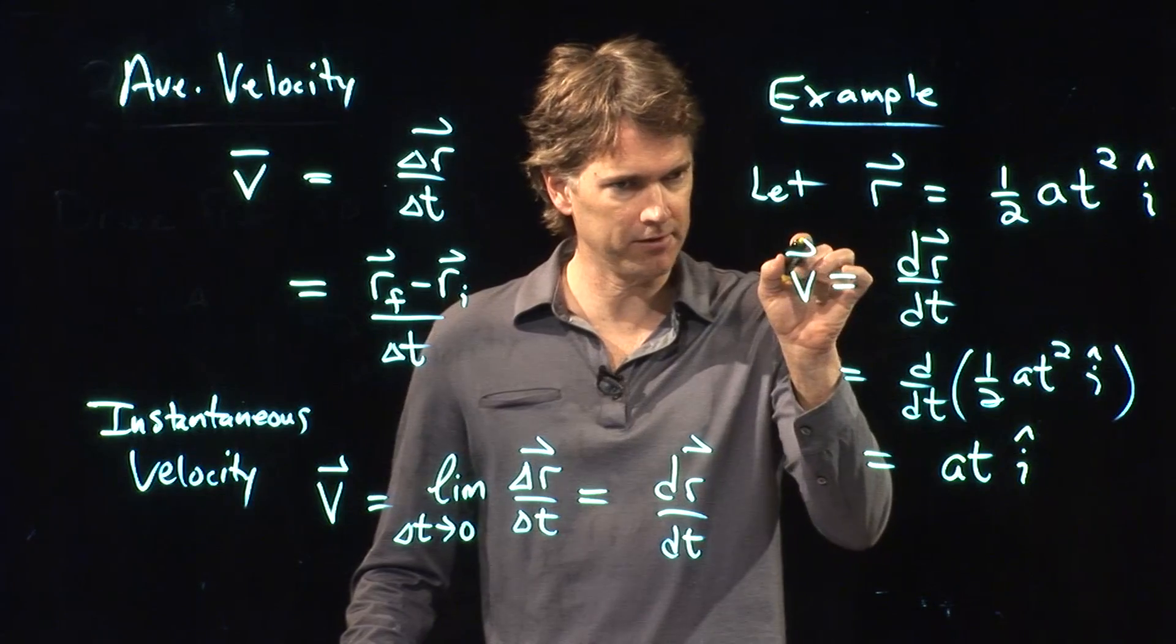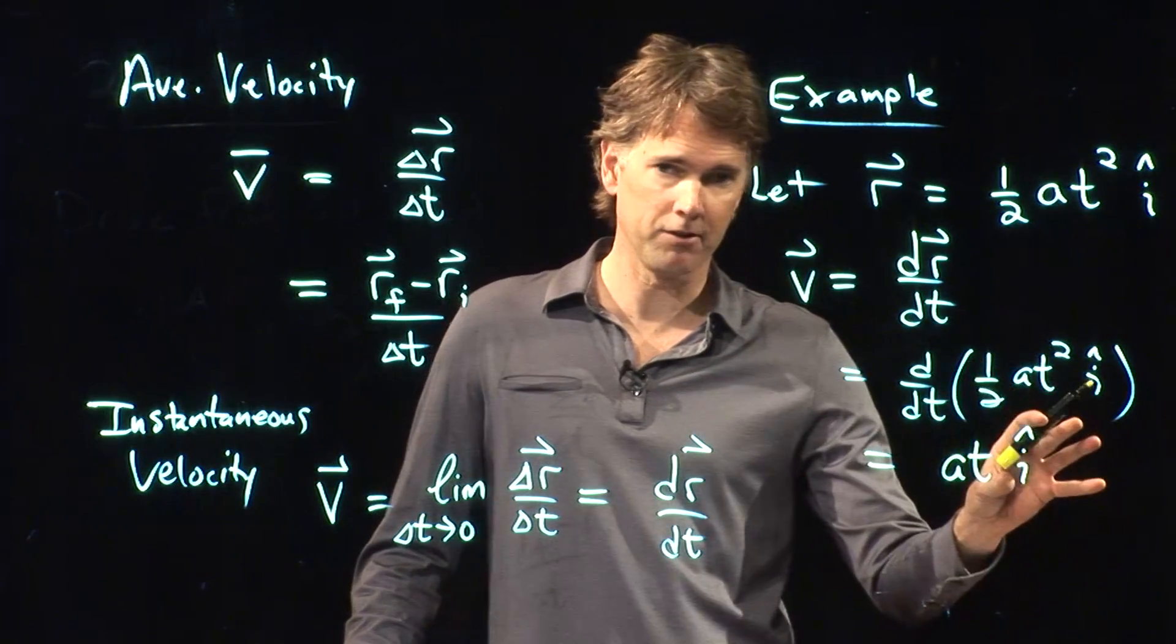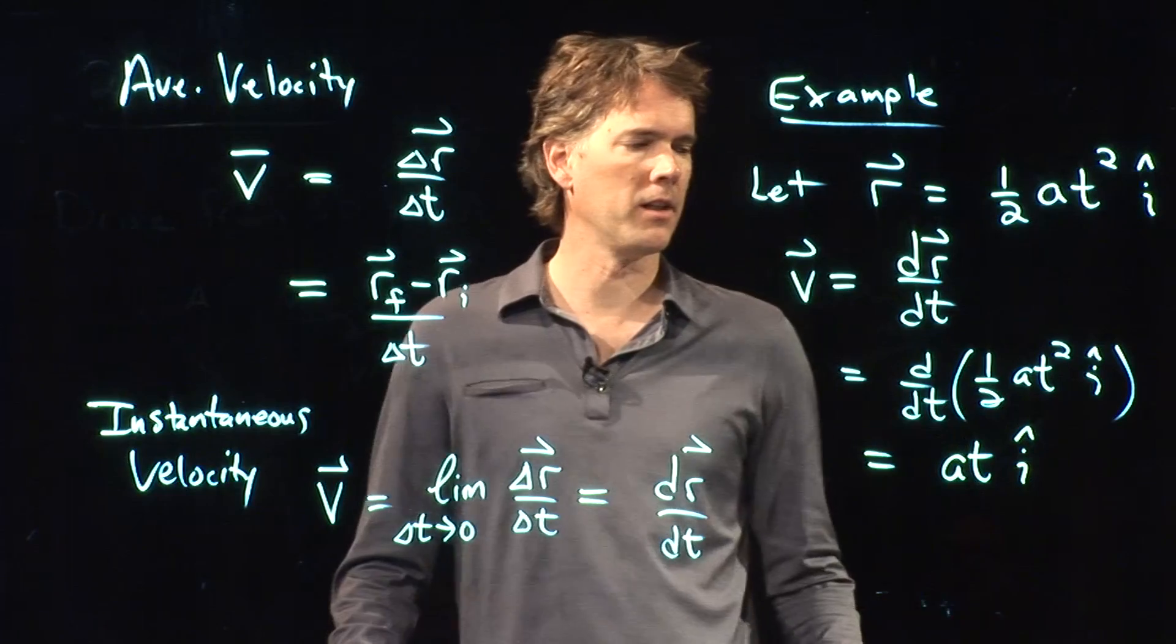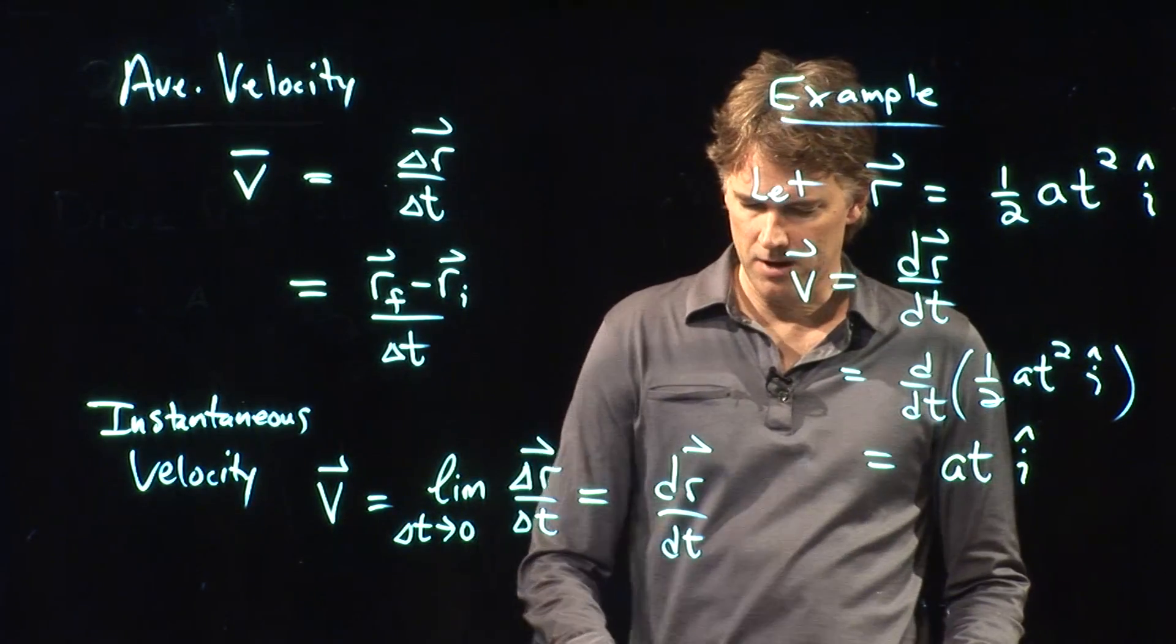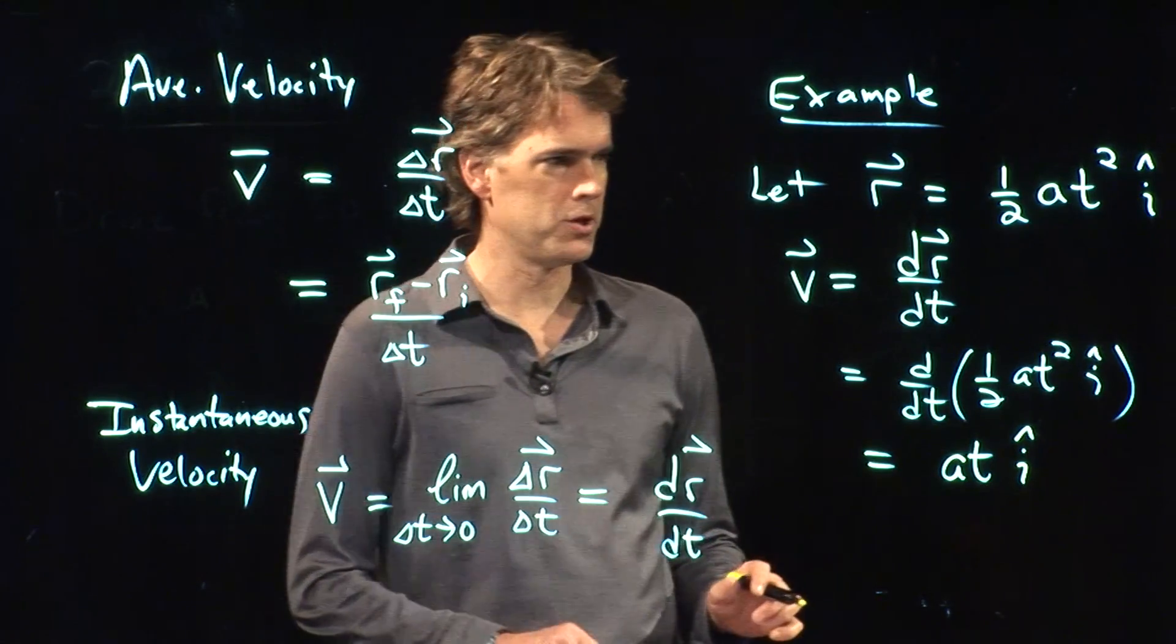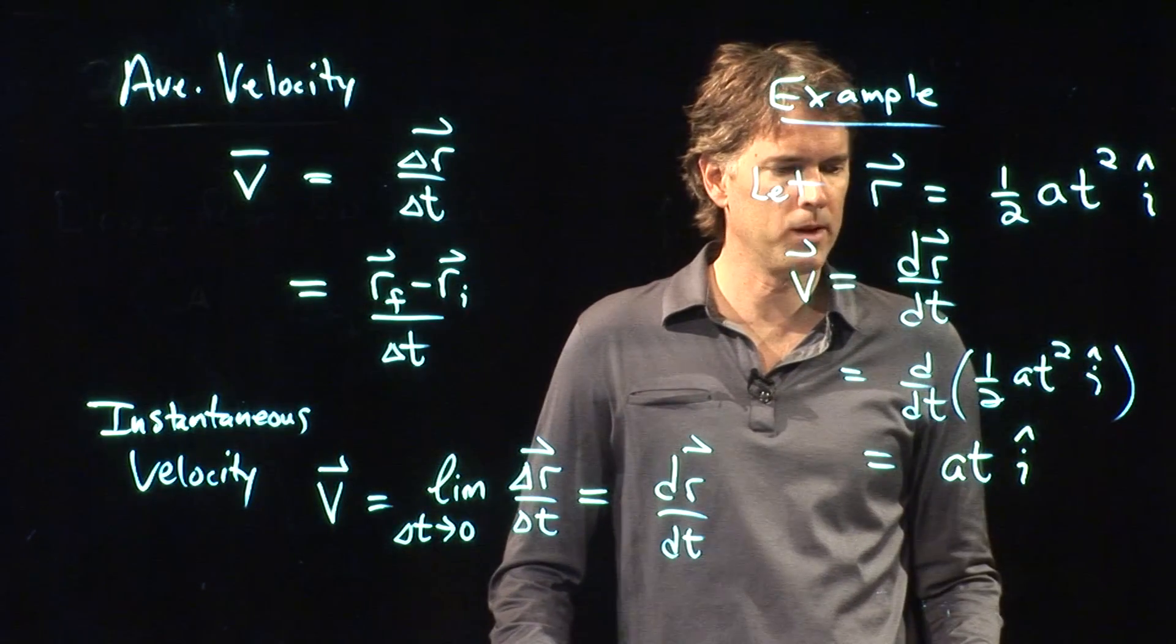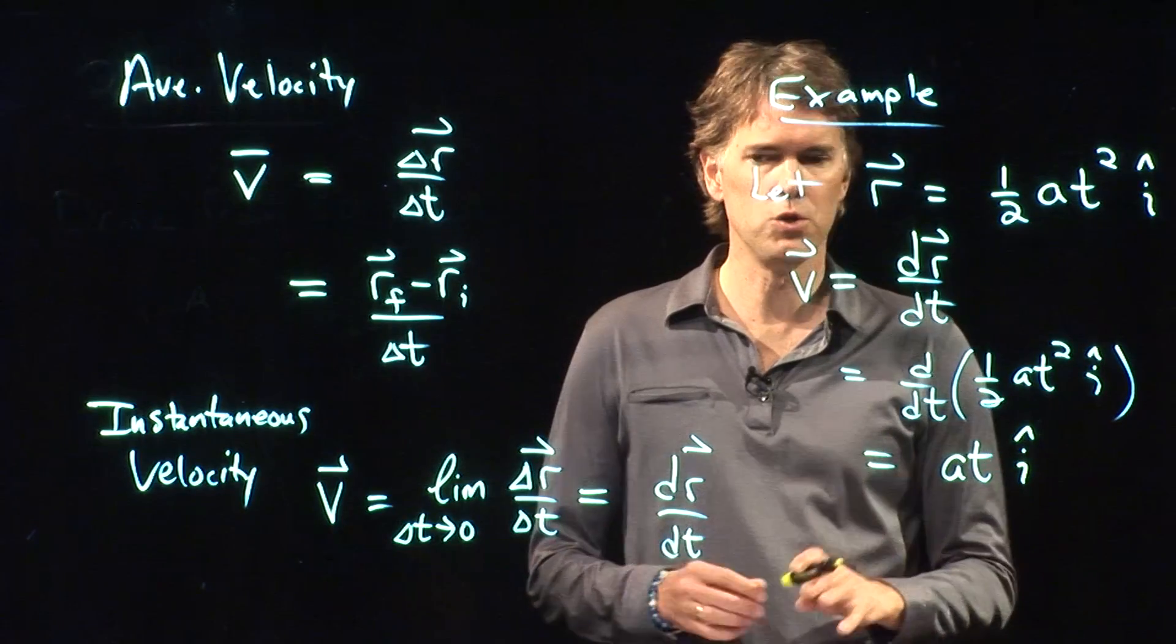The velocity is AT I hat. If you have a vector sign on the left side of the equation, you have to have a vector sign somewhere on the right side of the equation. Good. Now let's talk about two-dimensional motion, and let's take a look at how we can do an example like this in two dimensions.